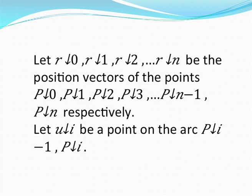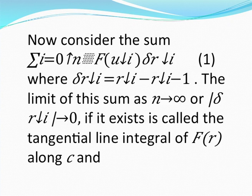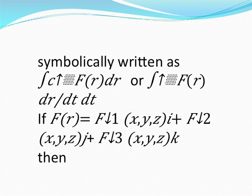Let u-i be any point on the arc p(i-1) and p-i. Consider the sum: summation from i equals 1 to n of f(u-i) delta r-i, where delta r-i equals r-i minus r(i-1). The limit of this sum as n tends to infinity, or mod delta r-i tends to 0, if it exists, is the tangential line integral of f(r) along curve c, written as the integral over c of f(r) dr, or the integral of f(r) dr/dt times dt.